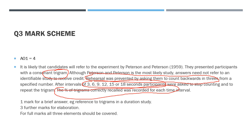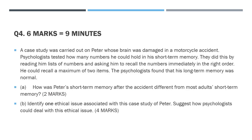Question four - six marks total, broken into two parts, nine minutes overall. A case study was carried out on Peter, whose brain was damaged in a motorcycle accident. Psychologists tested how many numbers he could hold in short-term memory by reading him lists of numbers and asking him to recall them immediately in the right order - he could recall a maximum of two items. His long-term memory was normal. Part A: how was Peter's short-term memory different from most adults'? Two marks. Part B: identify one ethical issue and suggest how psychologists could deal with it - four marks.